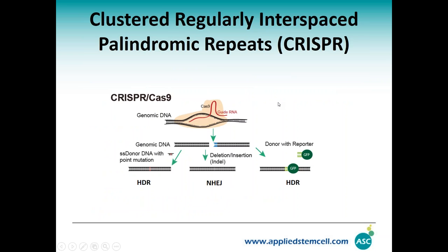Let me make sure everybody is on the same page with a very brief CRISPR introduction. There are two major components of CRISPR: one is Cas9 and one is a guide RNA. Cas9 is an endonuclease that cuts within the polynucleotide chain. You can imagine CRISPR is like a cruise missile — Cas9 is the explosive and the guide RNA is the computer program that tells Cas9 where to target. With the Cas9 and guide RNA you are able to target a specific sequence in the genome and create a double-strand break.